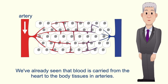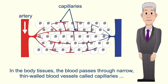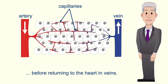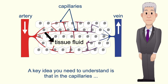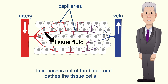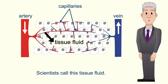Blood is carried from the heart to the body tissues in arteries. In the body tissues, the blood passes through narrow, thin-walled blood vessels called capillaries, before returning to the heart in veins. A key idea you need to understand is that in the capillaries, fluid passes out of the blood and bathes the tissue cells. Scientists call this tissue fluid.